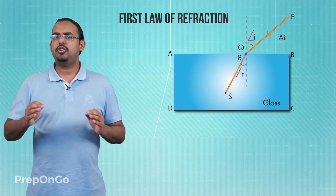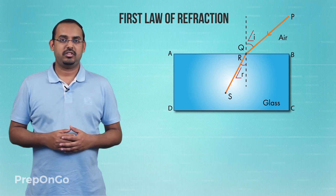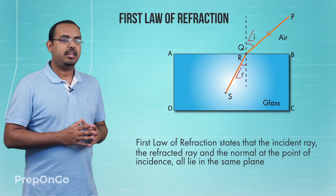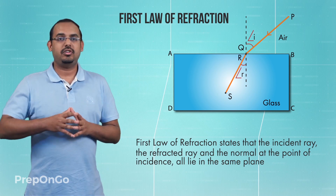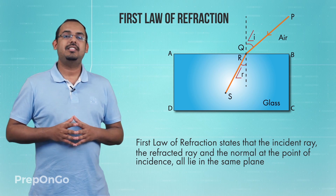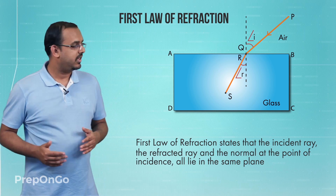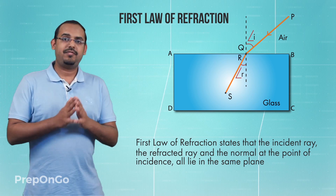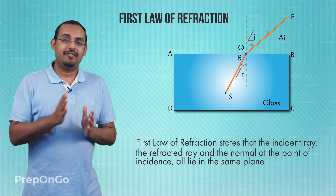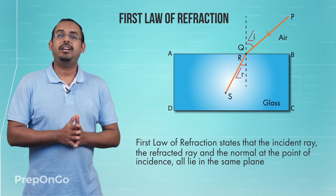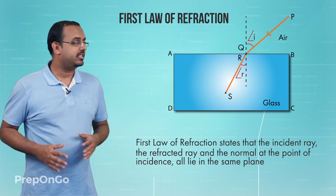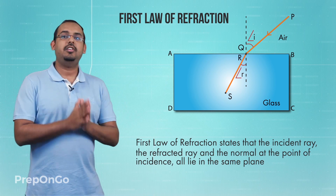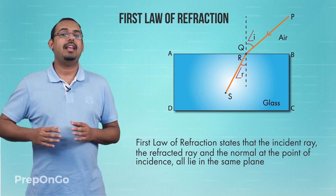Now let us talk about the two laws of refraction. The first law of refraction is similar to the first law of reflection. It states that the incident ray, the refracted ray, and the normal to the surface at the point of incidence all lie in the same plane. This means that after refraction, light travels in the same plane — it deviates from its original path but does not deviate out of the plane in which it was traveling.